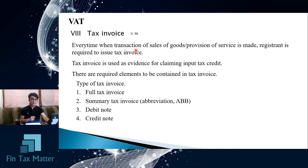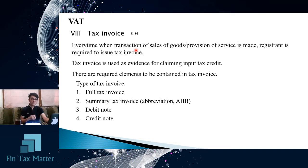There are four types of tax invoice. In the general case, the first is the full tax invoice. The second is the summary tax invoice, also called the tax invoice ABB, where ABB stands for abbreviation. The third is the debit note, and the fourth is the credit note. These are the four types of tax invoice.